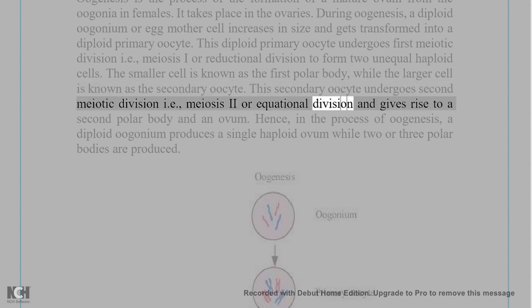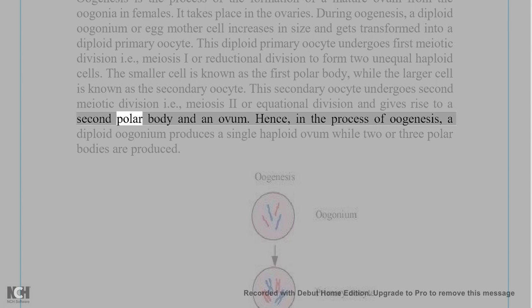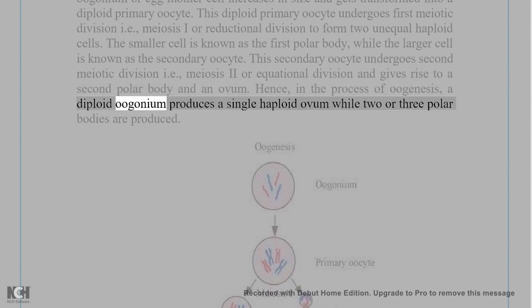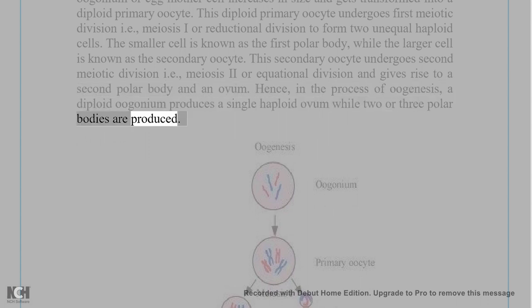This secondary oocyte undergoes second meiotic division (meiosis II, equational division) and gives rise to a second polar body and an ovum. Hence, in the process of oogenesis, a diploid oogonium produces a single haploid ovum while two or three polar bodies are produced.